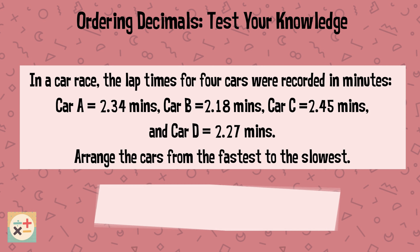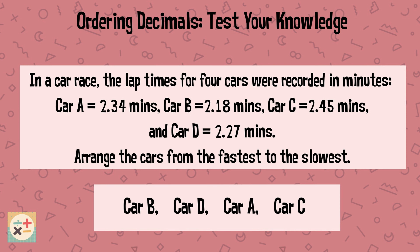From fastest to slowest, the order of the cars is: car B, car D, car A, and car C.